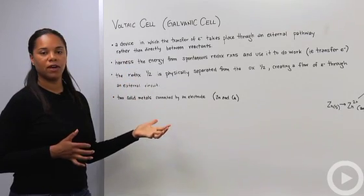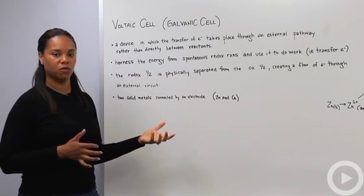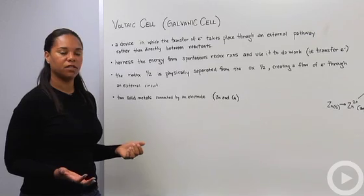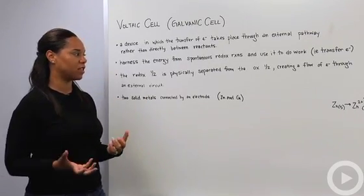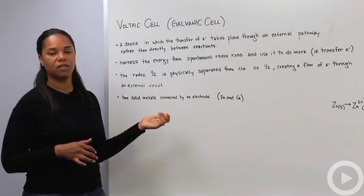You have one cell that has the half reaction that involves reduction and one cell that involves the half reaction for the oxidation part. So one cell for the reduction, one cell for the oxidation, and that creates a flow of electrons through the external circuit.